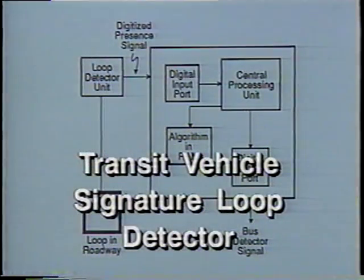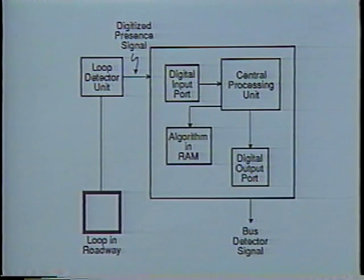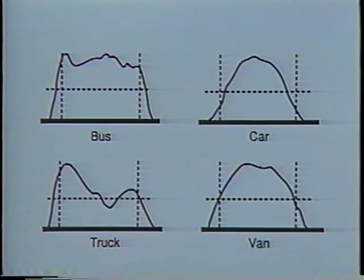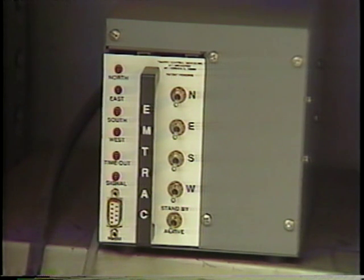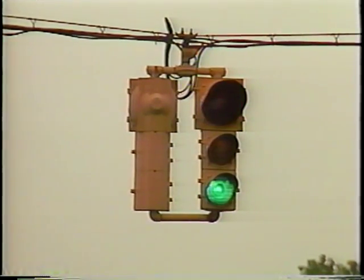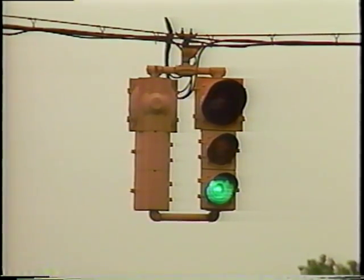The transit vehicle signature loop detector doesn't require transmitter equipment mounted on the vehicle. Instead, this special detector recognizes the vehicle passing over the loop by the unique pulse form of each vehicle. The last type of equipment used for providing vehicle priority is the radio transmitter-receiver, which functions very much like a light emitter system but uses radio frequency instead of light.